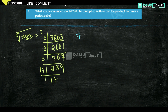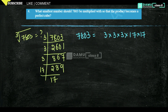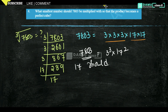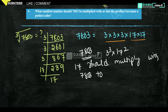So let us write: 7,803 = 3 × 3 × 3 × 17 × 17. That means we can write it as 3³ × 17². In order to make 7,803 a perfect cube, it should be multiplied by 17. So 17 should be multiplied with 7,803 to make it a perfect cube.